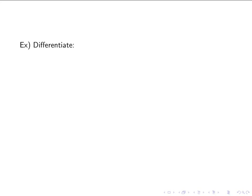Let's see what this looks like in an actual example. Let's differentiate y equals (2x minus 5) cubed. So u is going to be the function that's being raised to the power, so u is 2x minus 5, and then y is u cubed. We need dy/du — y equals u cubed, so what's the derivative? 3u squared.